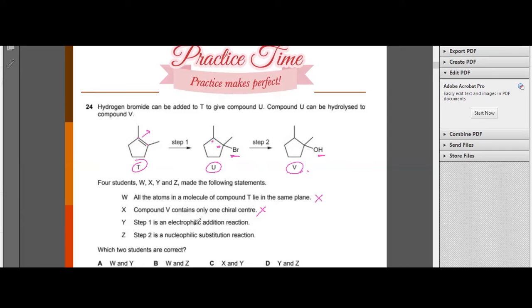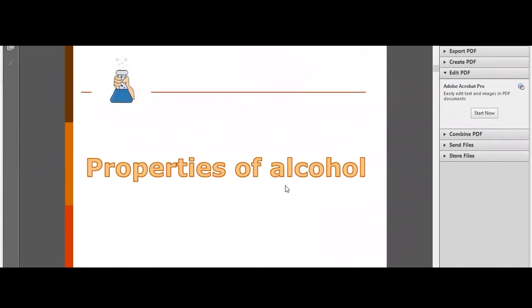Step 1 is an electrophilic addition reaction. Yes, since it is alkene, it undergoes electrophilic addition mechanism. And then step 2 is a nucleophilic substitution. Yes it is, because it's halogenoalkane, it undergoes nucleophilic substitution. So Y and Z are correct. So D is the answer for this question. You can see we talk about alcohol, but it's related to other functional groups that we already learned before.